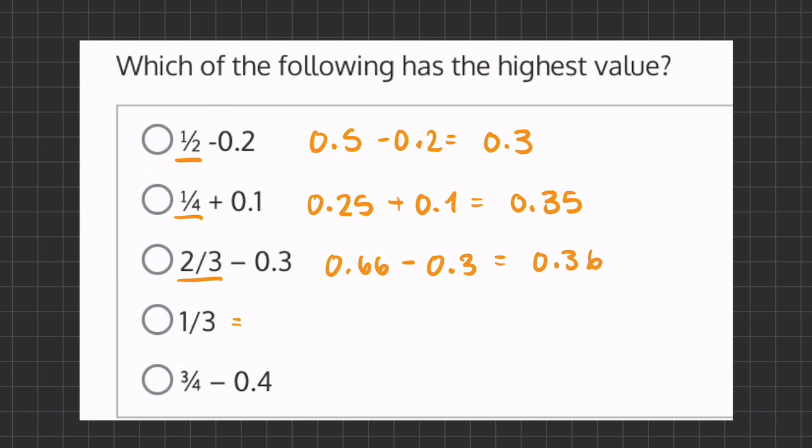Now, 1 third is equal to 0.33, and 3 fourths is equal to 0.75 minus 0.4, which will give us 0.35.